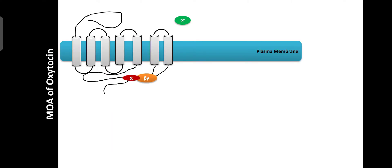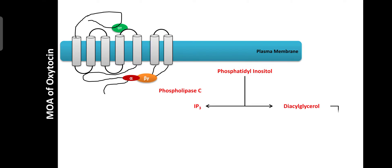Regarding the mechanism, oxytocin acts on certain receptors known as oxytocin receptors. These receptors are G protein-coupled receptors. Oxytocin acts on the oxytocin receptors and activates the phospholipase C enzyme. This enzyme converts phosphatidylinositol into inositol triphosphate and diacylglycerol. Further, diacylglycerol activates the protein kinase C enzyme. Due to activation of protein kinase C, oxytocin is involved in the regulation of various metabolic activities.